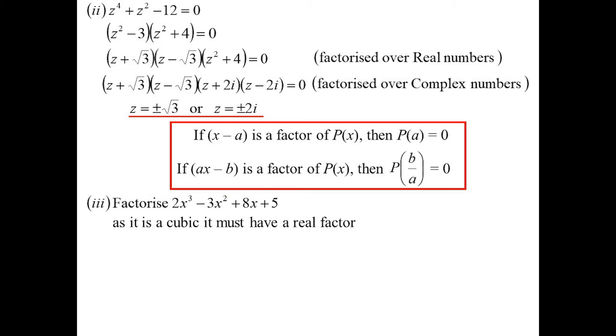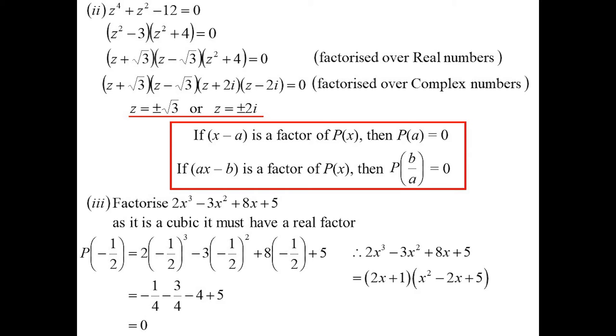Does 1 work? Does 5 work? Of course, there could be negative numbers. But in this case, we've got 2x cubed. So maybe it's a half or negative half or 5 on 2 or negative 5 on 2. But it turns out minus a half works. There's our real factor. So I know 2x plus 1 is a factor. I can do a polynomial division or just by inspection. It's now quadratic. Multiply together, give 5, adds together to give negative 2.